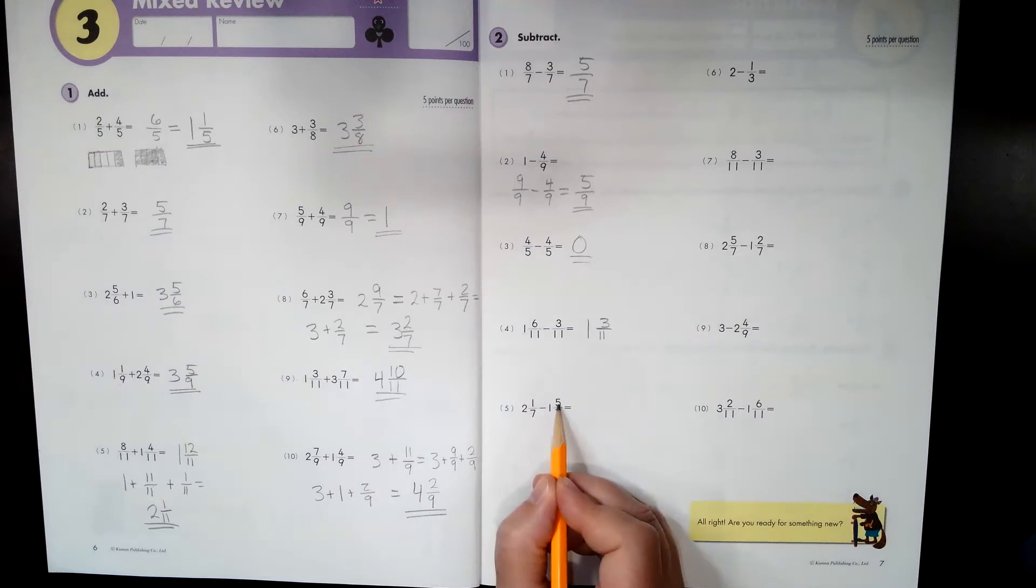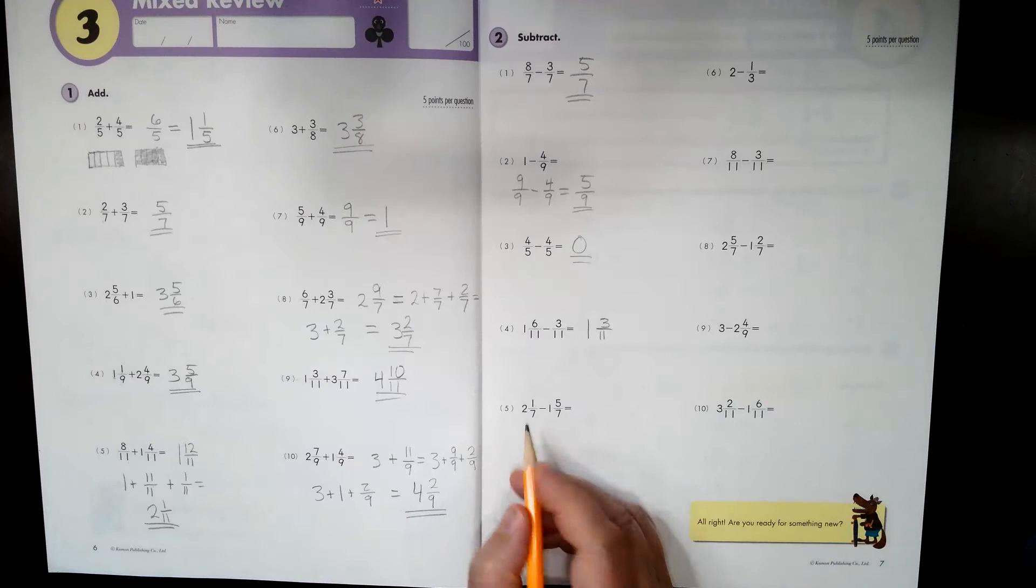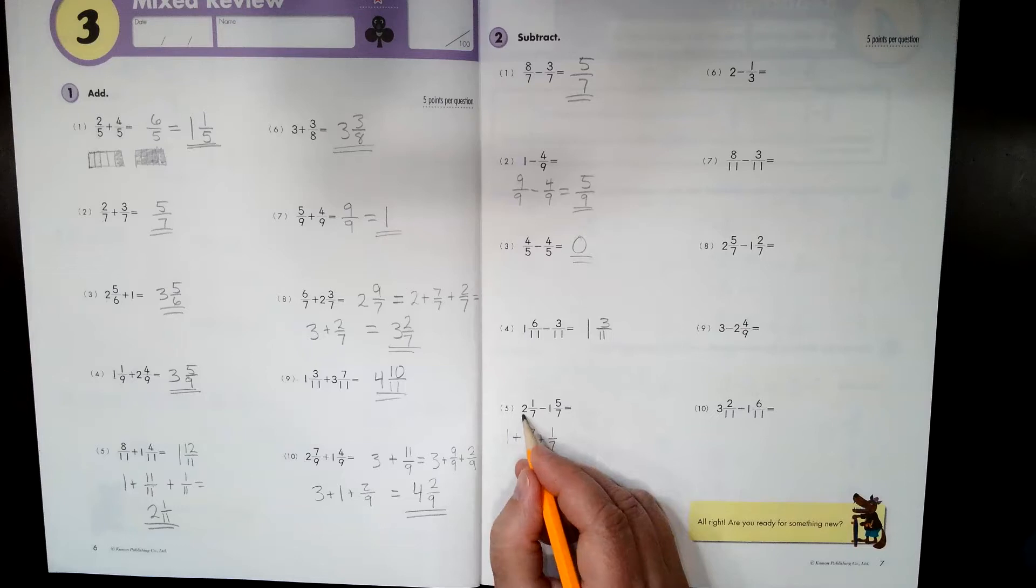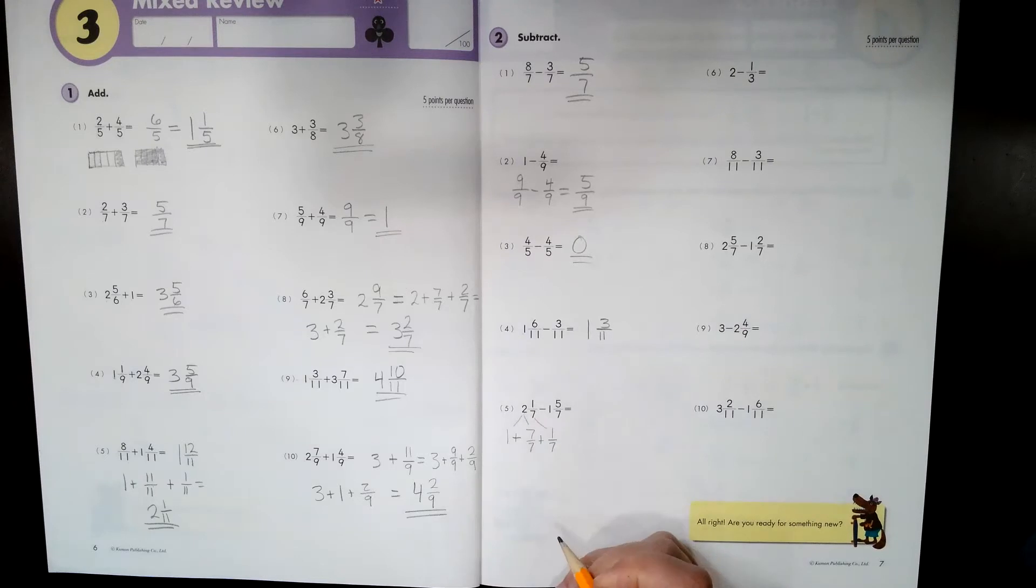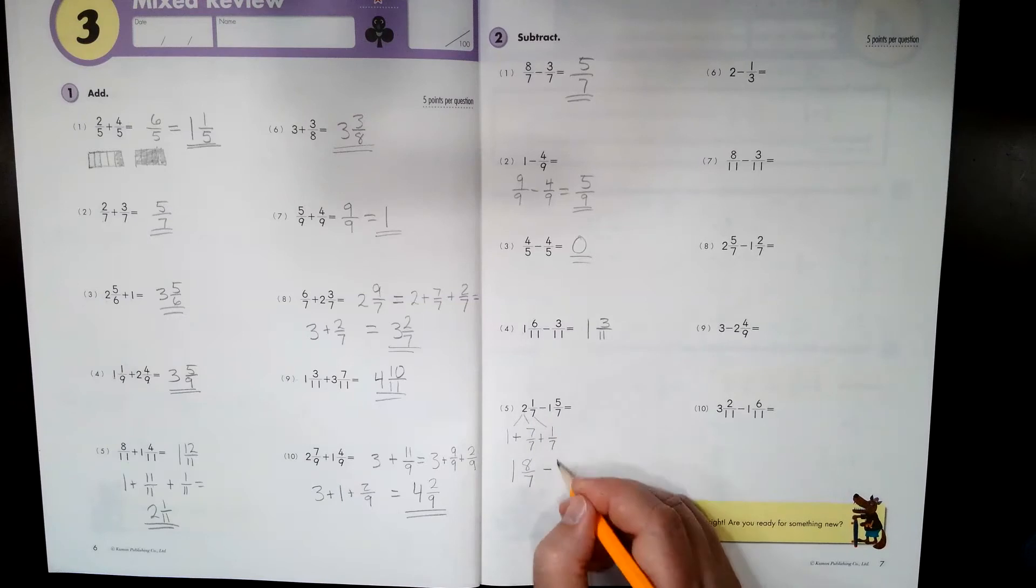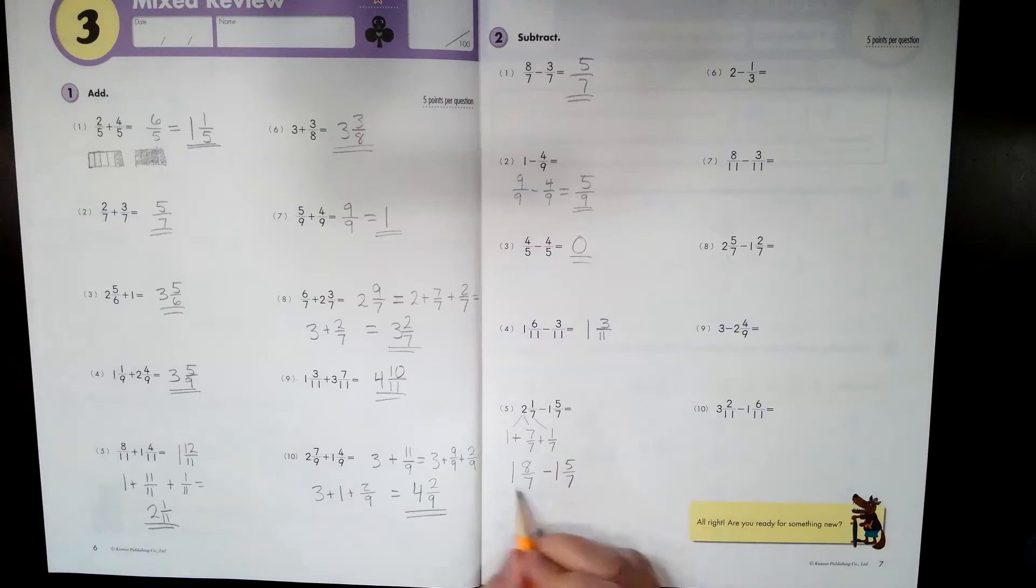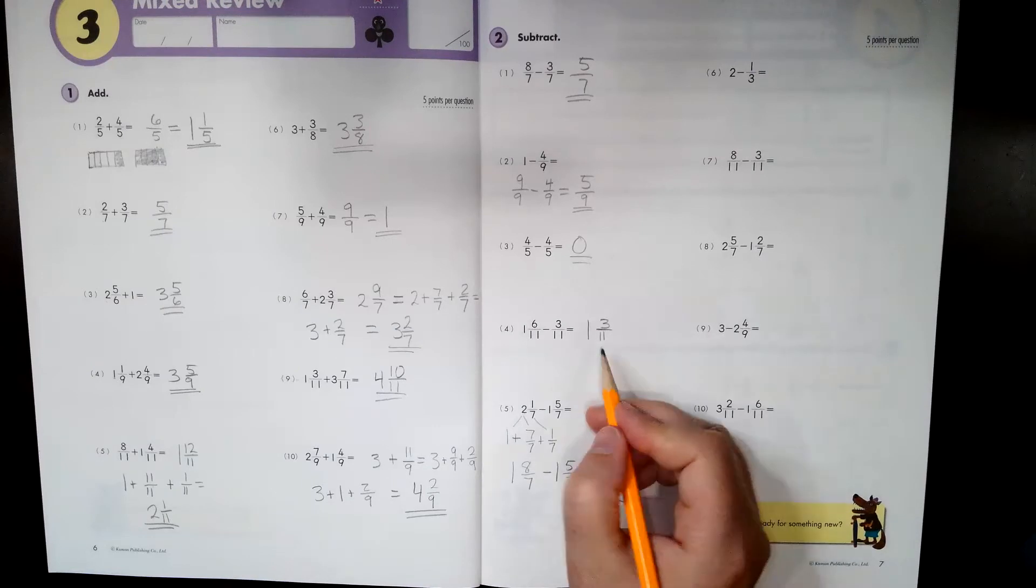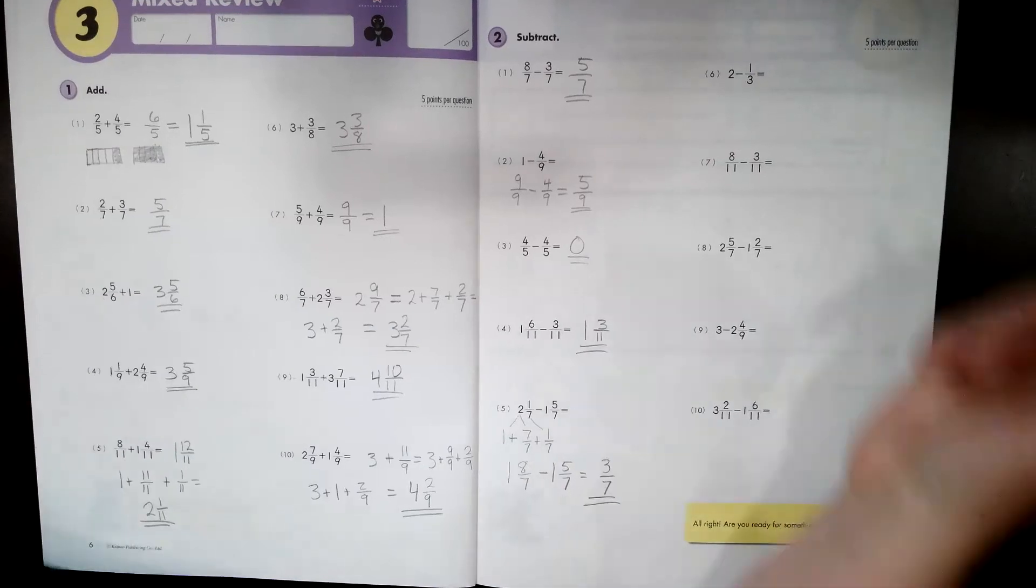Here we have a problem. This numerator is smaller than this one. So we need to convert. So this is one plus seven sevenths plus one seventh. That's how I broke it out. So I broke the two into these two parts and the one seventh I just brought down. Now I'm going to put these back together here, but I want to put these two parts together. So I have one and eight sevenths minus one and five sevenths. Now my numbers all line up and it's easy to do the math. One minus one is zero. Eight minus five is three sevenths. And that's my final answer.